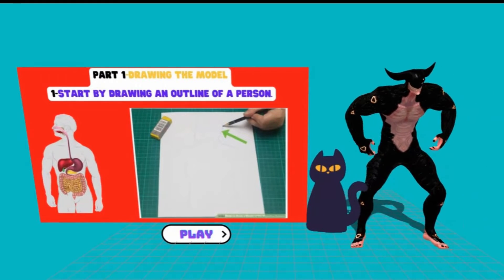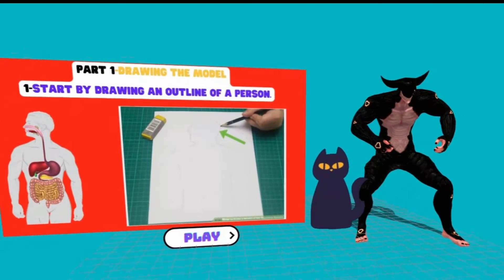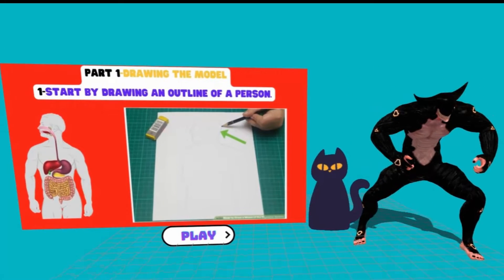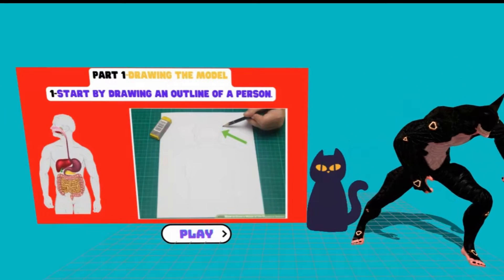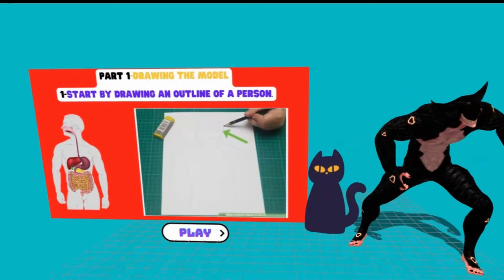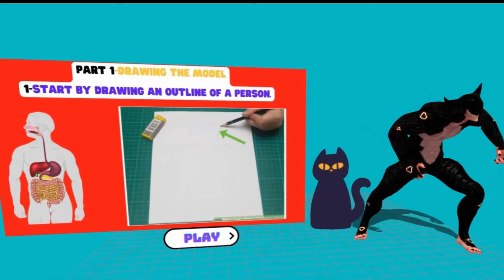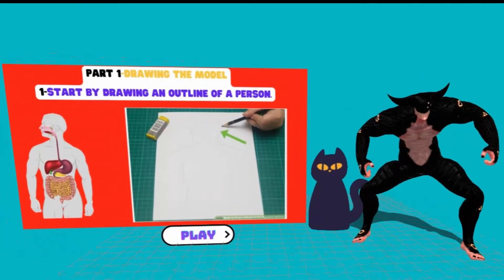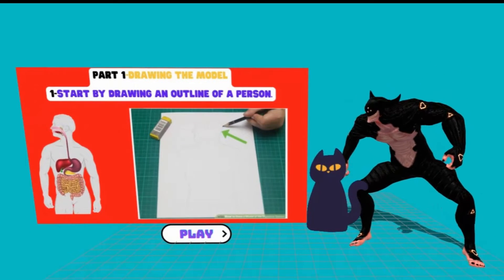Draw the head in proportion to the body as it would be on a human. It doesn't have to be a very involved or elaborate outline — a simple circle for the head and a somewhat rectangular torso will do. This is just to provide a frame of reference for your digestive model. Draw the head as a profile rather than straight on to make it easier to show the digestive organs in the head. If you wish, feel free to be creative and embellish this outline a bit — you can draw eyes, a nose, ears, and hair, and even give your person a name. Just don't draw over the torso or you will obscure your model.